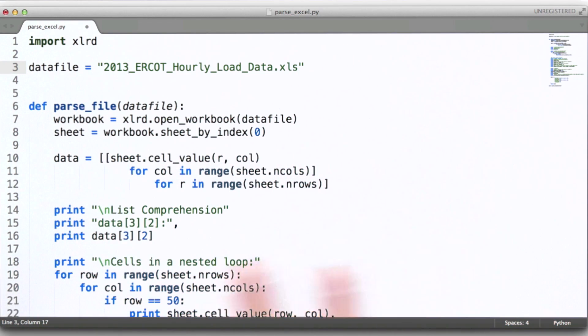And you'll find that XLRD is entirely zero-based indexing. So the very first column is actually column zero, the very first row is actually row zero.